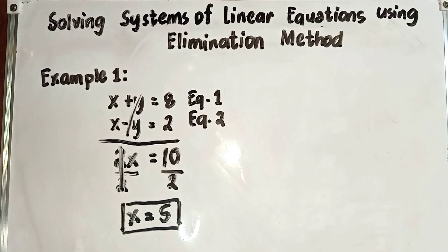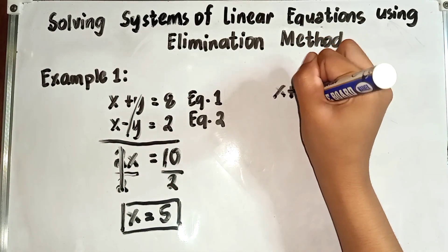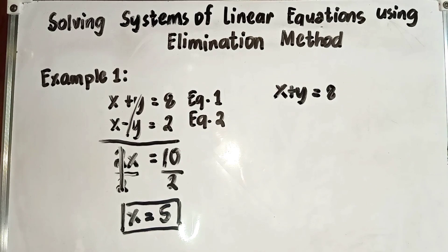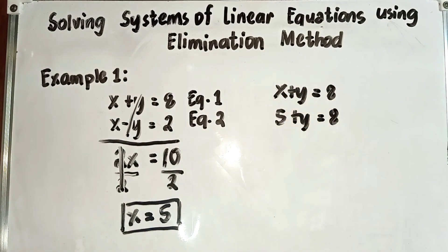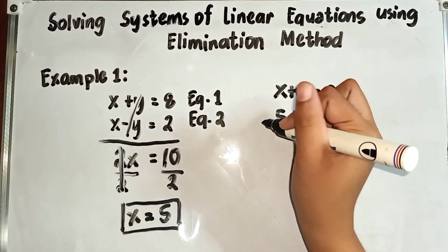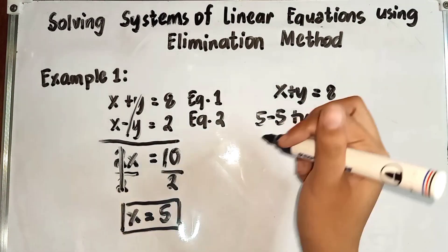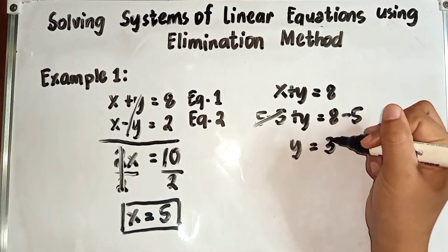We are going to solve for y. You can choose either equation 1 or equation 2. In my case, I will use equation 1: x plus y is equal to 8. We substitute the value of x, which is 5: 5 plus y is equal to 8. Since we only need y, we subtract both sides by 5. So 5 minus 5 cancels out, and y is equal to 8 minus 5. Therefore y is equal to 3.